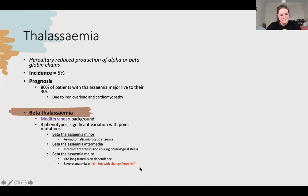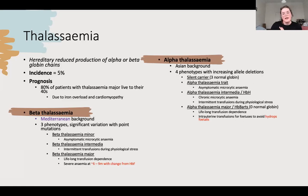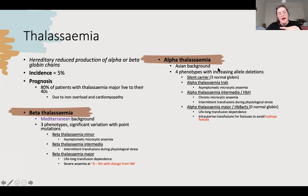Alpha thalassaemia has four phenotypes because there are four alleles, and in alpha they completely delete. A silent carrier still has three normal alpha alleles. Alpha trait is similar to beta minor - you pretty much don't know about it. Intermedia, also called HbH disease, causes chronic microcytic anaemia; you can be symptomatic but usually fine until physiological stress, with two normal and two absent alleles. Alpha major (HbBH) means you have nothing, presents intrauterine from week six, and babies need transfusions to survive.